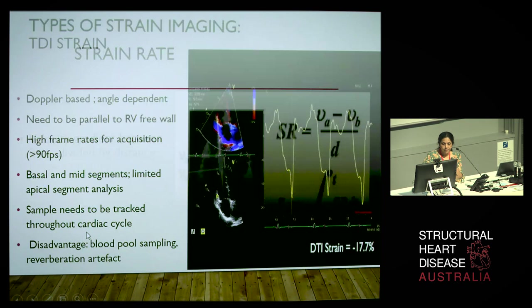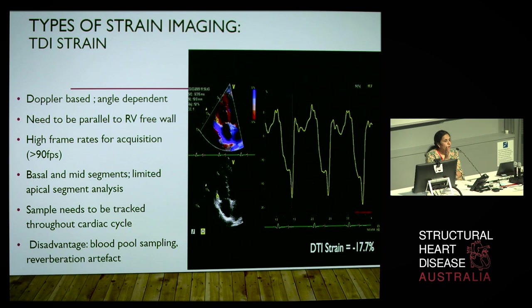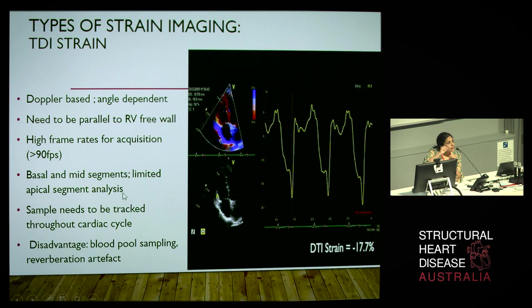What are the types of modalities through which we can get strain? It started off with tissue Doppler strain, which is a very elegant modality, especially if you want high temporal resolution. The limitation is it's Doppler-based, so you have to really line up against that RV free wall. If you're not parallel to the motion, you're going to underestimate strain. Most of the literature only looked at basal and mid right ventricular strain, and the sample needs to be tracked throughout the cardiac cycle, making it quite onerous — often done in dark rooms by research fellows.